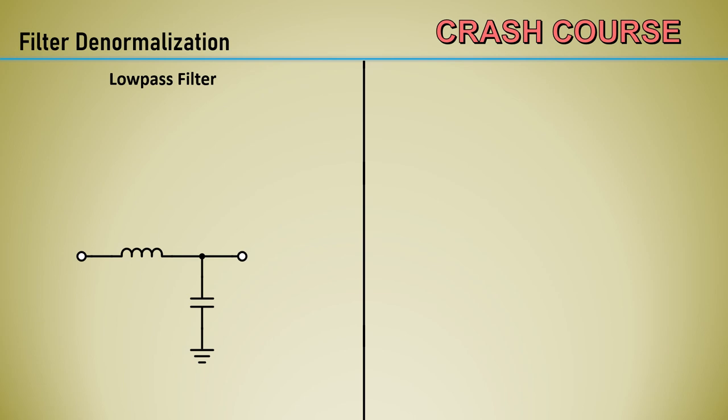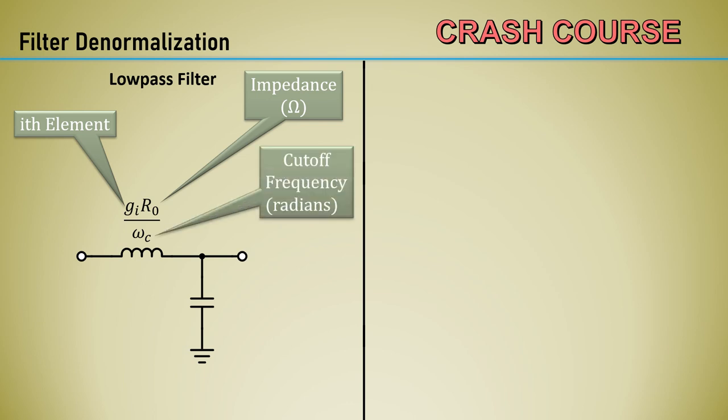Let's proceed with designing Butterworth filters by denormalizing to the desired frequency and impedance. Let's start with a simple low-pass filter topology. It is a series inductor and a shunt capacitor. This is the denormalization equation for the inductor. G sub i is the i-th element from the table. The first element of the filter will use G sub 1 and so forth. The impedance is scaled from the normalized 1 ohm up to the desired impedance R0. The element value is denormalized to the desired frequency by dividing the element value by omega-C, the cutoff frequency in radians. As I mentioned, omega-C is the 3 dB point of the transfer function.